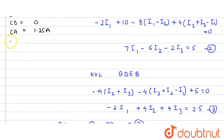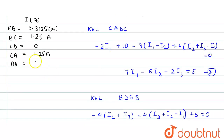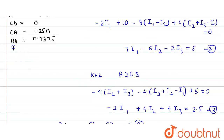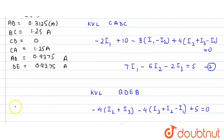In branch AD, the current is i1 - i2 = 1.25 - 0.3125 = 0.9375 A. In branch DE (or EB), the current equals i3 = 0.9375 A. These are the currents in all branches. Hope you understood the solution, thank you.